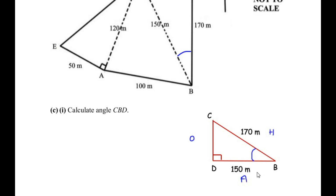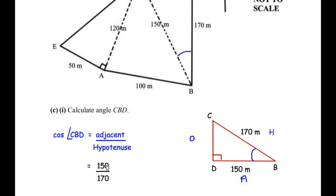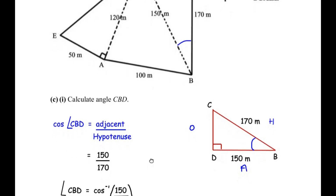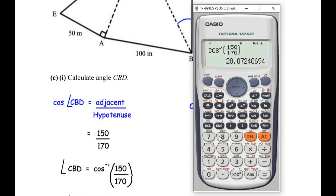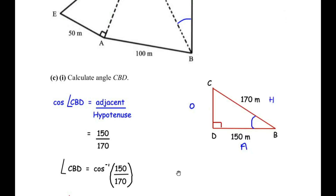Since we have the hypotenuse and adjacent side, we use the cosine ratio: cos of angle CBD equals adjacent over hypotenuse, which is 150 over 170. Taking the inverse cosine: angle CBD equals cos inverse of 150 over 170, giving us 28.07 degrees, or rounded to one decimal place, 28.1 degrees.